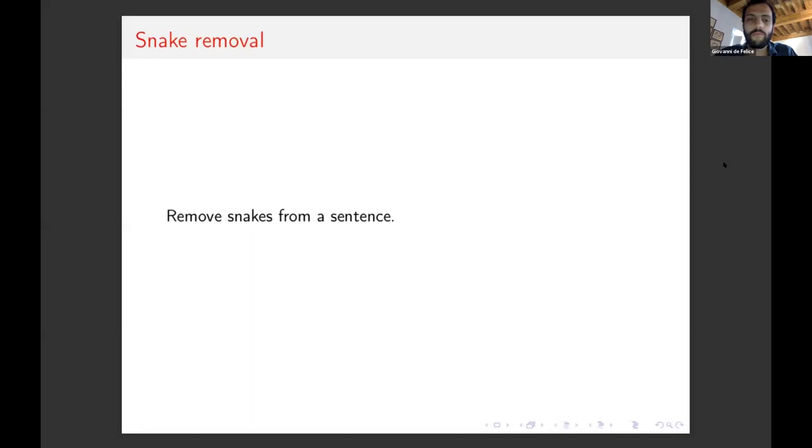We're going to use it to model a simple example that was given in the philosophical investigations. Let me read Wittgenstein directly. The language is meant to serve for communication between a builder A and an assistant B. A is building with building stones. There are blocks, pillars, slabs, and beams. B has to pass the stones in the order in which A needs them. For this purpose, they use a language consisting of the words block, pillar, slab, beam. A calls them out. B brings the stone which he has learned to bring as such and such a call. Conceive this as a complete primitive language.